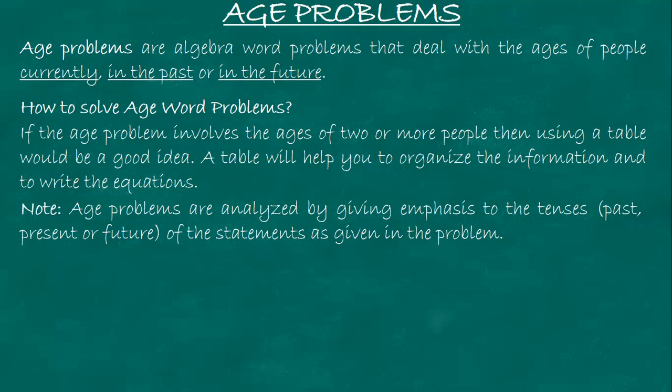Note: Age problems are analyzed by giving emphasis to the tenses - past, present, or future - of the statements given in the problem. The past uses verbs like was or were. Present uses is. Future uses will be. For past, you'll see expressions like two years ago, three years ago. For future, it's five years after, five years later, or five years hence.